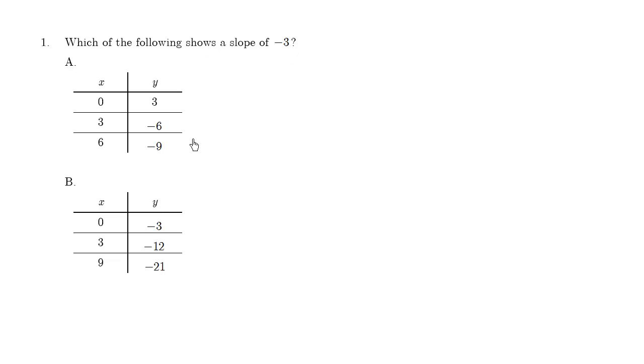We have these two tables. And be careful. Don't choose choice A even though we go down by threes. You may be tempted to choose this.